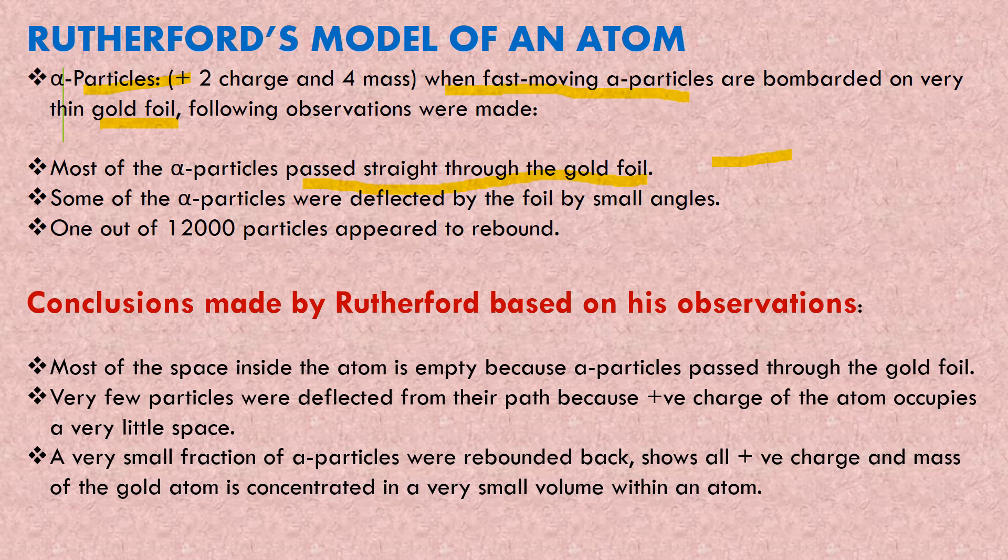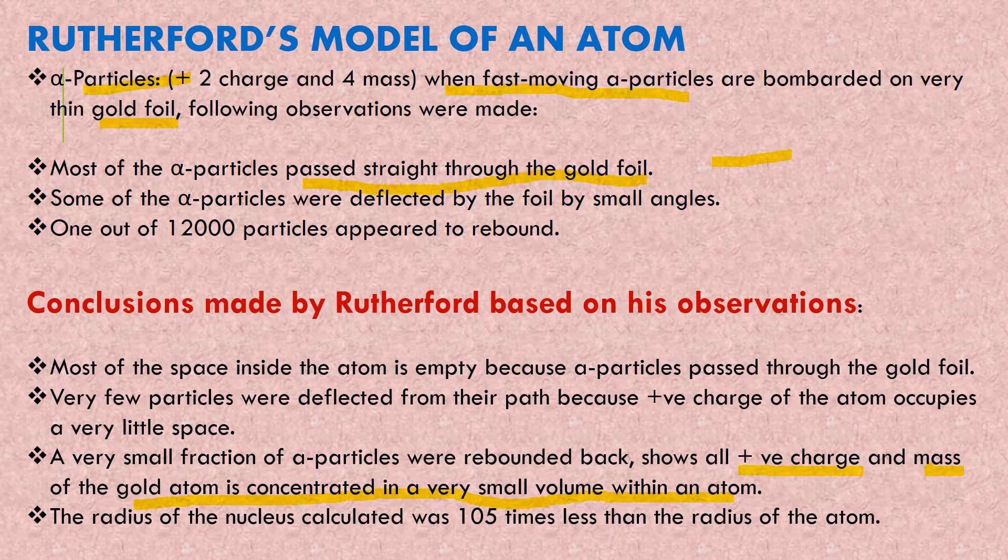Third, a very small fraction of alpha particles were rebounded back, which shows all positive charge and mass of the gold atom is concentrated in a very small volume within an atom. That means in a certain place, all the positive charges are concentrated. So when alpha particles hit on that place, they are rebounding. The radius of the nucleus calculated was 10^5 times less than the radius of the atom - very important point.